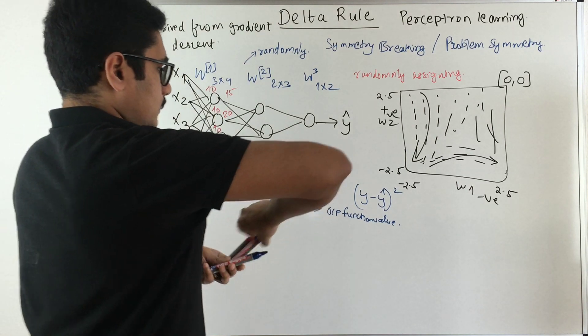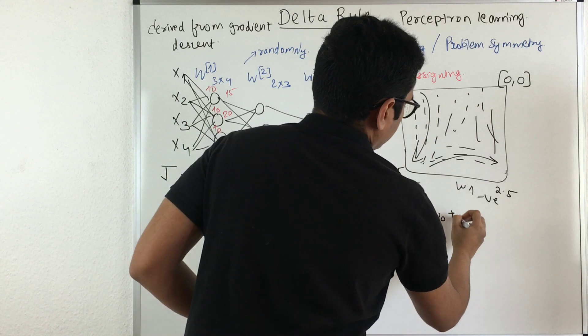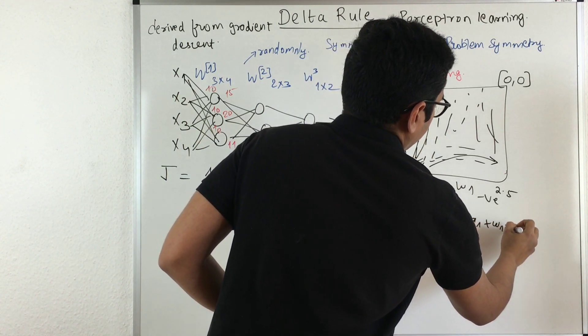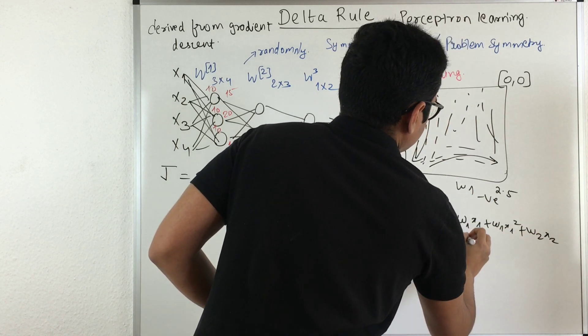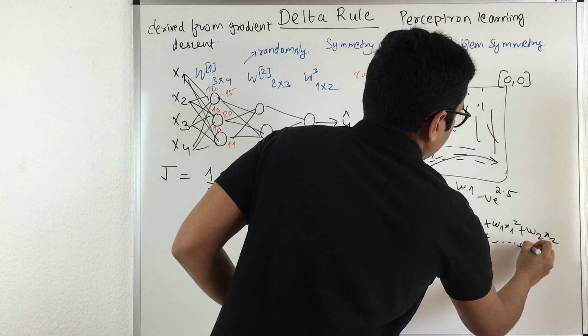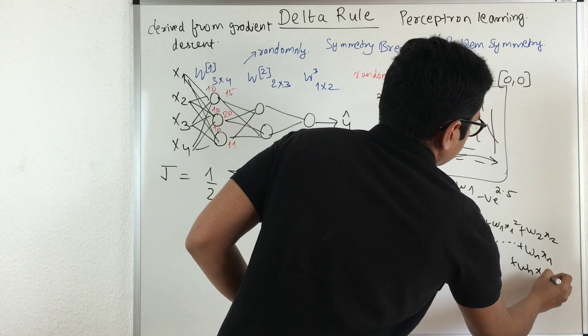TD is nothing but our training value and OD is our output function or output value. Say initially for the setting we have given the output as W0, now this is for the bias, then we have W1X1 plus W1X1 square plus W2X2 plus W2X2 square and so on up till WNXN plus WNXN square.